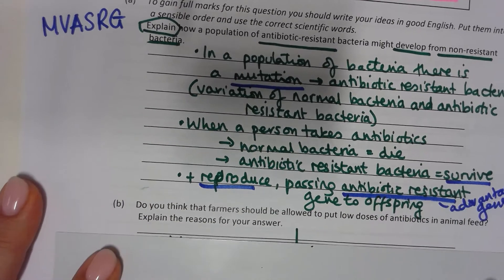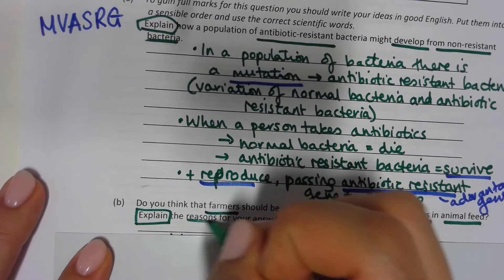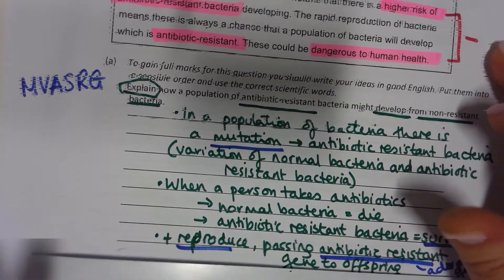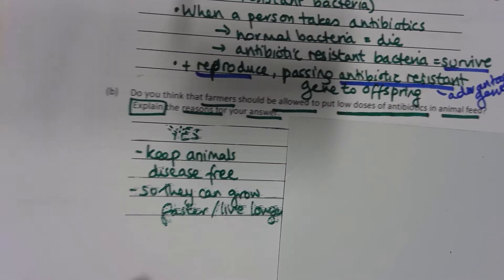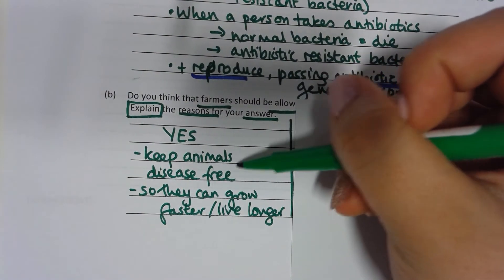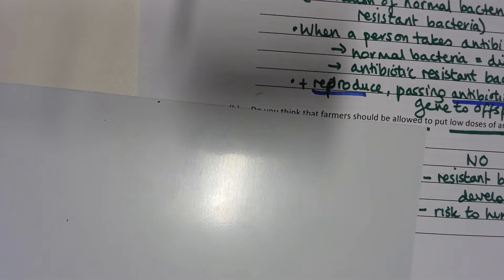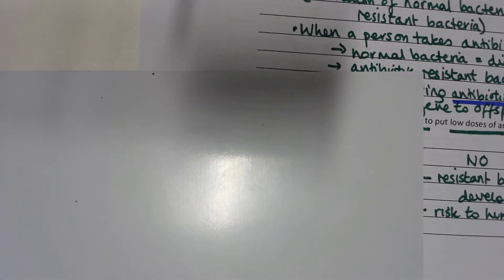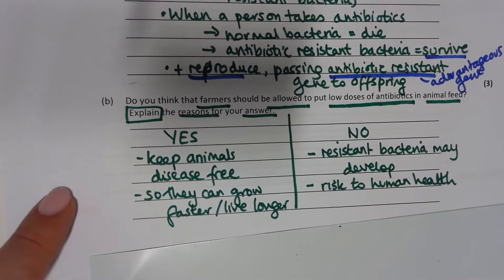Opinion question: should farmers be allowed to put low doses of antibiotics in animal feed? Use the passage to support your answer. You don't get a mark for just saying yes or no — the mark is for the reason. If yes: because it keeps animals disease free so they can grow faster or live longer. If no: because resistant bacteria may develop, which is a risk to human health.